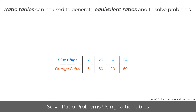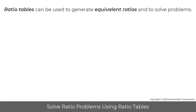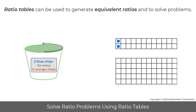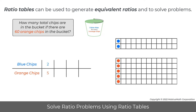Ratio tables can be used to generate equivalent ratios and to solve problems. For example, in a bucket there is a ratio of two blue chips for every five orange chips. The problem is to find out how many total chips are in the bucket if there are 60 orange chips in the bucket. To get started,